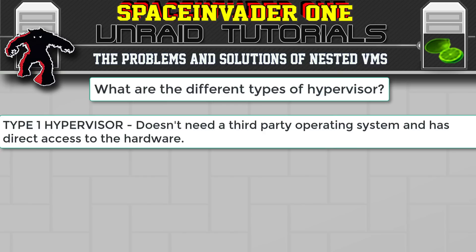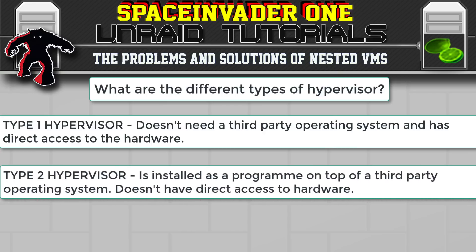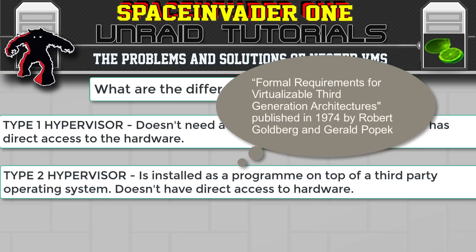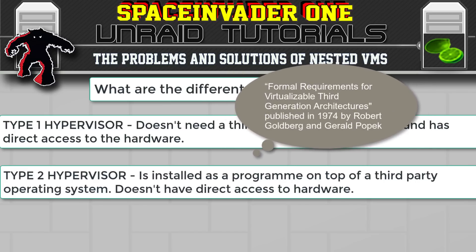That makes it a Type 1 bare metal hypervisor. Type 2 hypervisors require a host operating system to run on. Common examples are VMware Workstation on Windows or Parallels Desktop on a Mac. Interestingly, the differences debated about the two hypervisor types go back to 1974 and a paper called 'Formal Requirements for Virtualizable Third Generation Architectures' written by Robert Goldberg and Gerald Popeck, though Goldberg abandoned the distinction in his future papers.